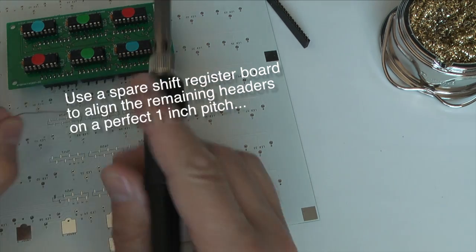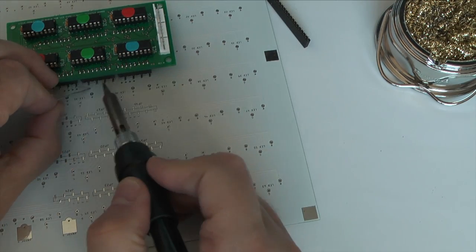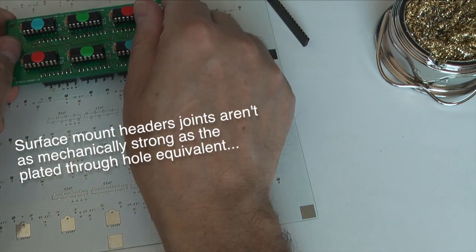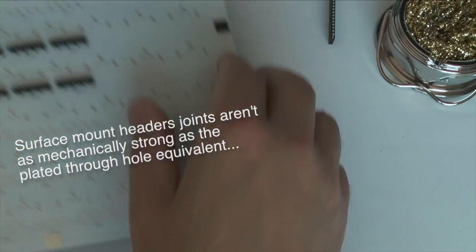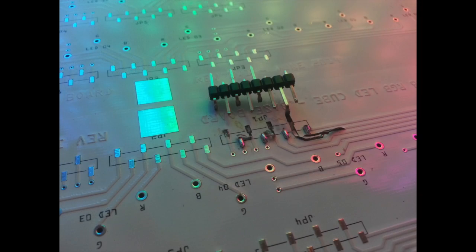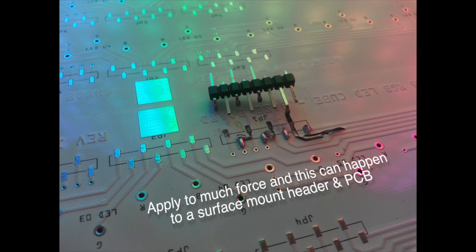Using surface mount headers is a bit of a compromise because the solder joint doesn't provide the same mechanical strength as the plated through hole equivalent. I proved this by soldering a surface mount connector onto a spare circuit board, then applied some force and there was no surprise when a few tracks were ripped up.